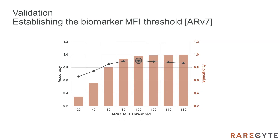The next few slides cover validation studies for biomarkers that leverage the use of MFI thresholds. For novel assays, we utilize biomarker positive and biomarker negative cell lines to set an MFI threshold that is subsequently used to determine biomarker accuracy and precision. Here we show the data used for setting the ARV-7 threshold for our prostate assay. Accuracy shown with the gray line and specificity indicated by the orange bars are plotted at different ARV-7 MFI threshold values. Specificity is the fraction of biomarker negative cells identified as ARV-7 negative, while accuracy is the fraction of correctly classified ARV-7 negative and ARV-7 positive cells using a given threshold. For this assay, an MFI threshold of 100 provided maximum accuracy with specificity well over 90%.